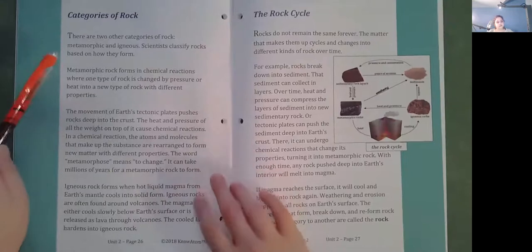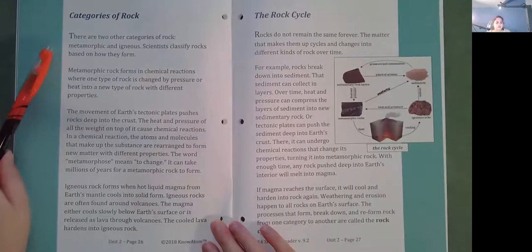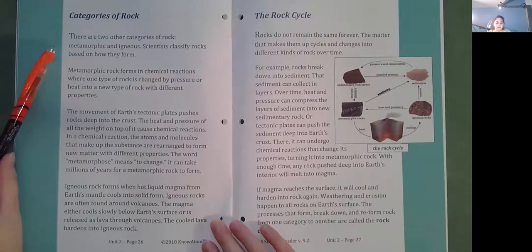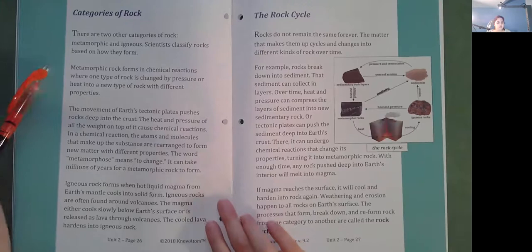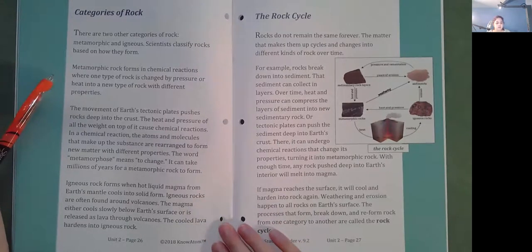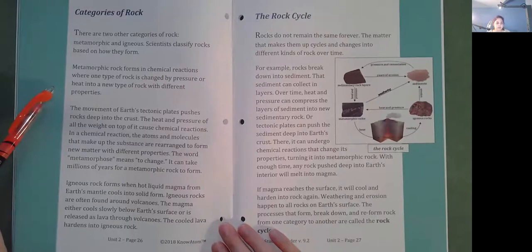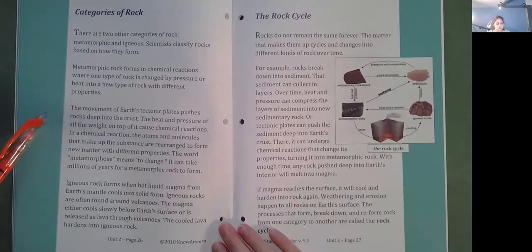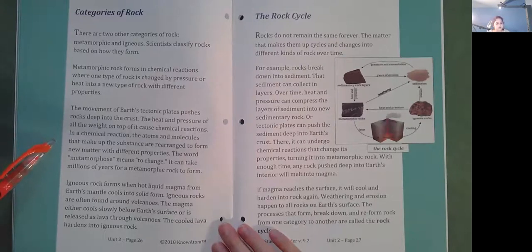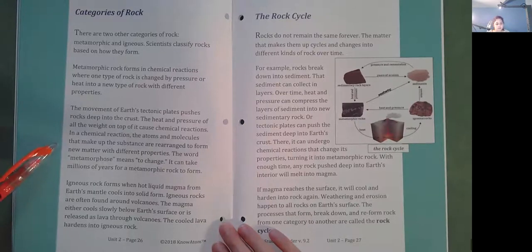Categories of rock. There are two other categories of rock: metamorphic and igneous. Scientists classify rocks based on how they form. Metamorphic rocks form in chemical reactions where one type of rock is changed by pressure or heat into a new type of rock with different properties. The movement of Earth's tectonic plates pushes rocks deep into the crust. The heat and pressure of all the weight on top of it causes chemical reactions. In a chemical reaction, the atoms and molecules that make up the substance are rearranged to form new matter with different properties. The word metamorphose means to change.